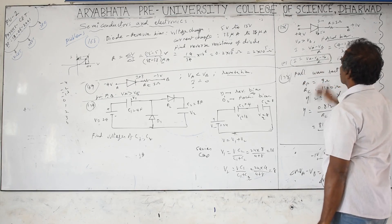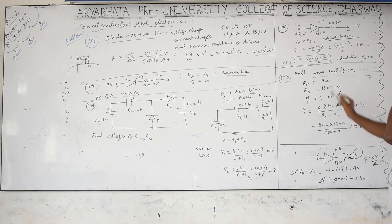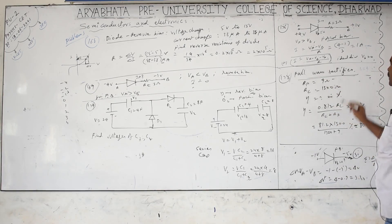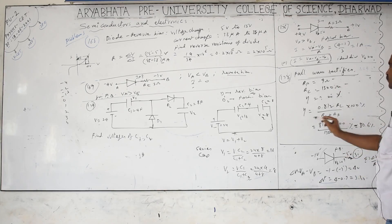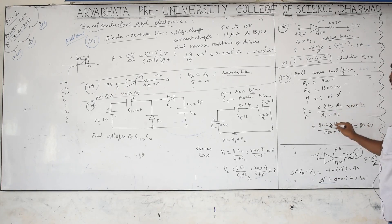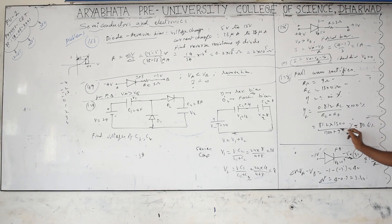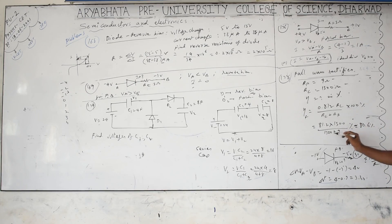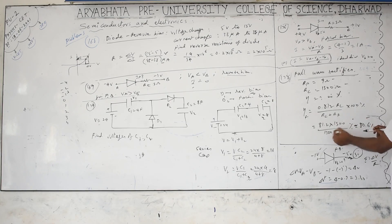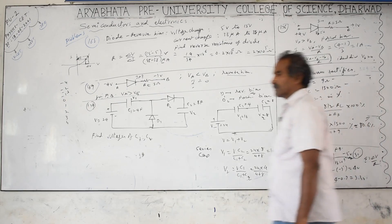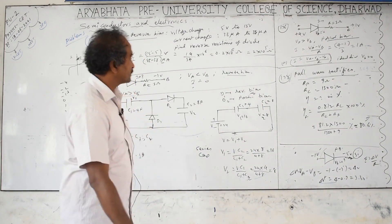Problem 178: Full wave rectifier efficiency. The efficiency formula is η = 0.812 × RL/(RL + Rf) × 100%. With RL = 1300 Ω and Rf = 9 Ω, η = 81.2 × 1300/(1300+9) ≈ 80.6%. If Rf is very small compared to RL, you can approximate by neglecting Rf, giving approximately 81.2%. Use this approximation to save time and check against answer options.